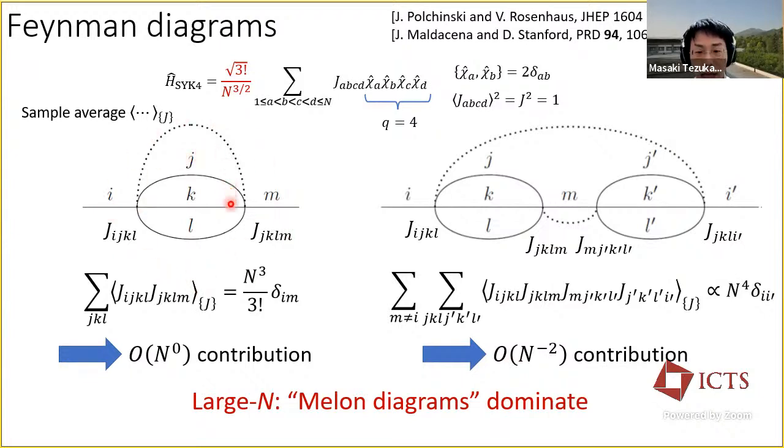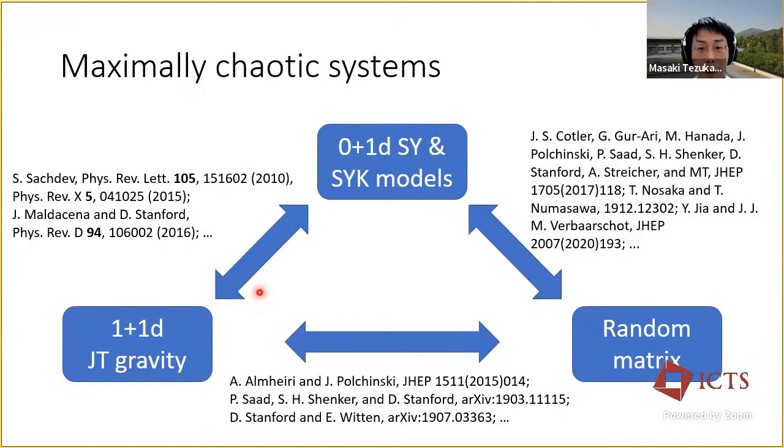In such a way, we can show that the melon diagrams dominate in the large N limit. Then, we can obtain various Green's functions of the system and discuss the low energy behavior of the model. There are now several bugs connecting the zero plus one dimensional Sachdev-Ye and Sachdev-Ye-Kitaev models, one plus one dimensional JT gravity, and random matrix, which are maximally chaotic, fast scrambling systems.